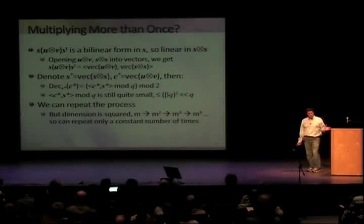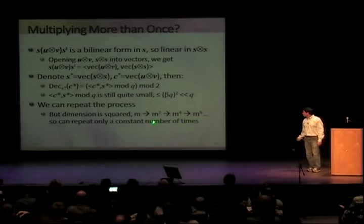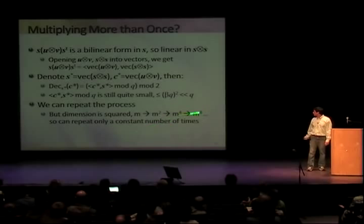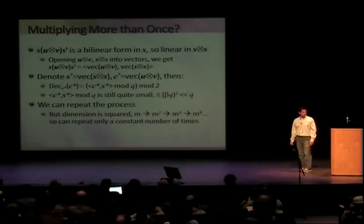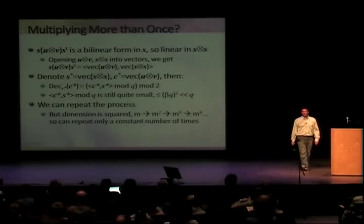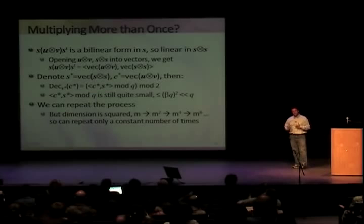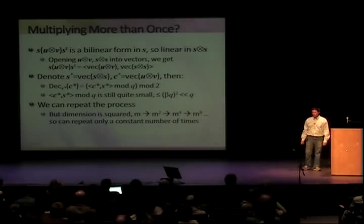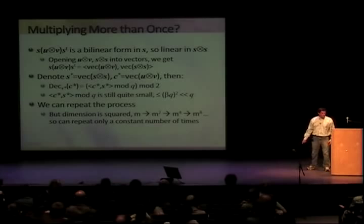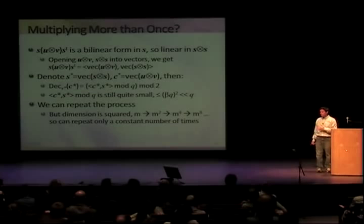Moreover, the inner product is exactly the same, so if parameters are set correctly, this is still small. If the original was smaller than beta·Q in absolute value, now it's smaller than that squared, which is still smaller than Q. We can repeat this process: encrypt, multiply, arrange, multiply again. But there's a fairly acute problem — the dimension grows quite fast. We started from an N-vector; after multiplying we get a matrix, so it's N squared; next time N to the fourth; then N to the eighth. If you want to keep things polynomial, you can't do more than a constant number of multiplications.